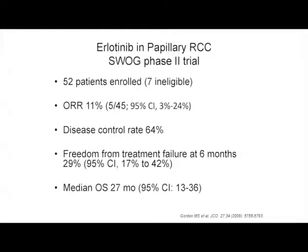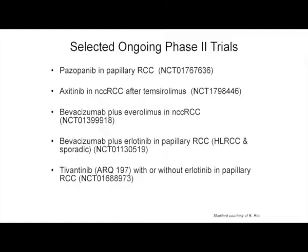Erlotinib, based on studies with C225 monoclonal antibody against EGFR in the laboratory, led SWOG to embark on studies in papillary carcinoma. They enrolled 52 patients with an overall response rate of 11%, 64% disease control, and a median overall survival of 27 months — a drug that probably needs further study. Ongoing studies in non-clear cell carcinoma include pazopanib in papillary carcinoma, axitinib in non-clear cell after temsirolimus, bevacizumab combined with everolimus and also with erlotinib in papillary renal cancer, and tivozanib or ARC-197 with or without erlotinib in papillary cancer.